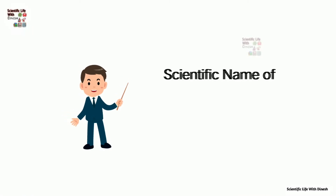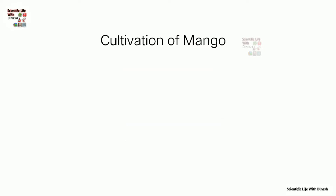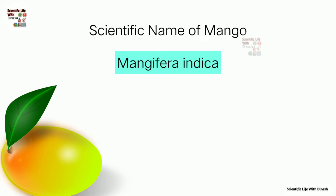I am discussing the scientific name of mango. Mango is one of the most important and oldest fruits. The cultivation of mango is very common in all warmer regions. The scientific name of mango — also called the botanical name — is Mangifera indica, and its family is Anacardiaceae.